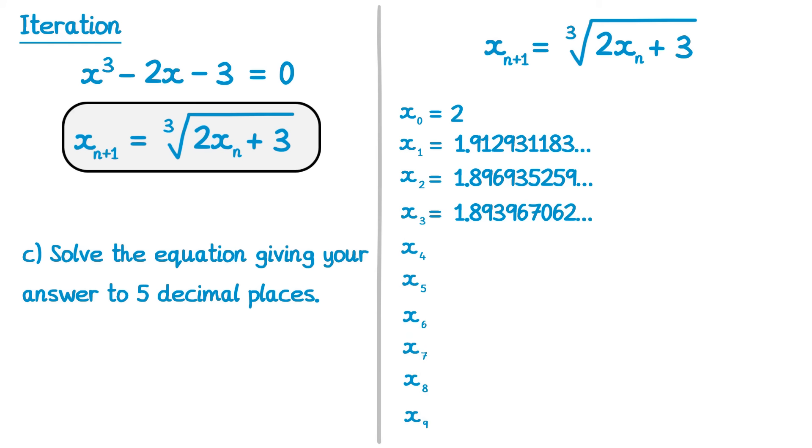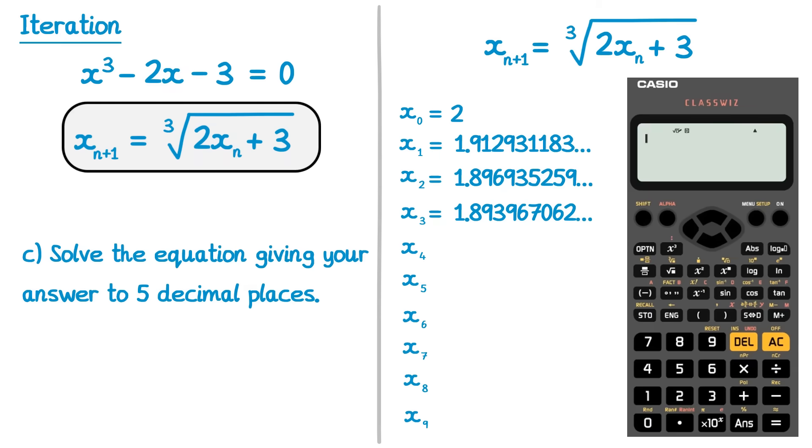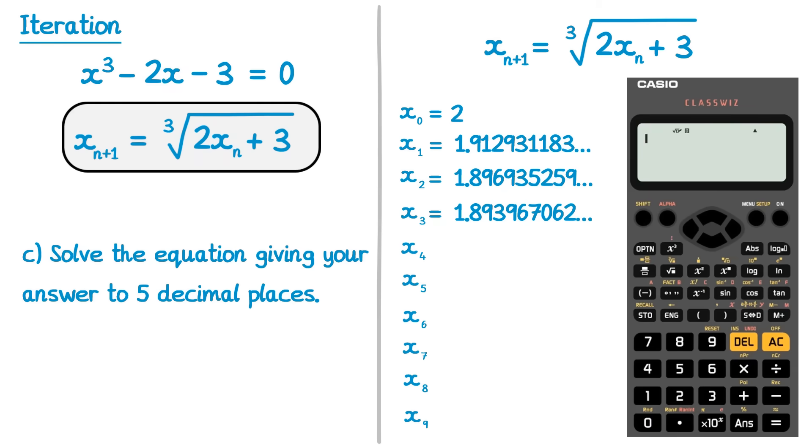Fortunately, this is made a lot easier using a calculator. We can calculate iterations really quickly using a calculator. To do this, I'm going to press 2, and then equals, because 2 was the initial value of x0 that was given to us in the question. The effect of this is this number 2 here is stored in the calculator's memory. It was the most recent number it calculated.